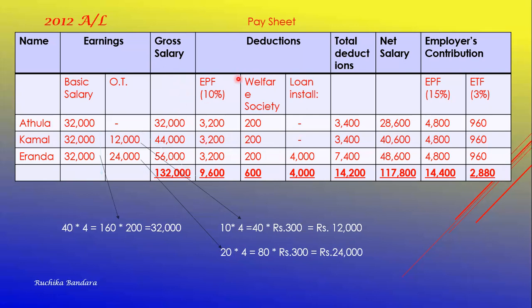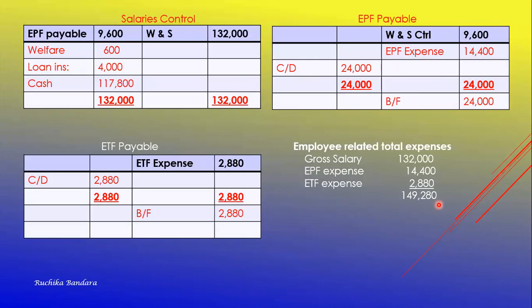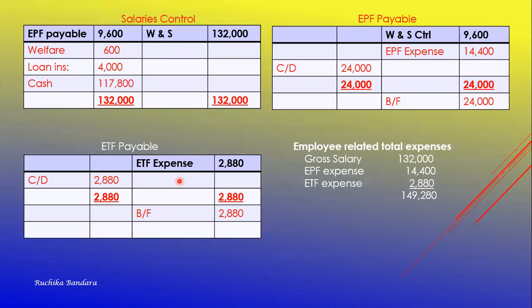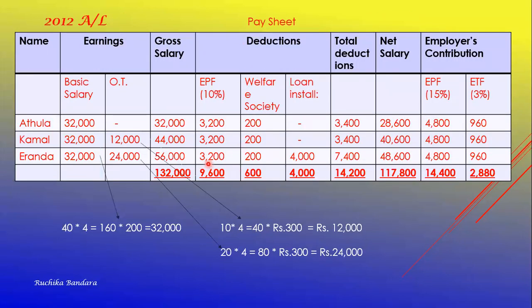When finalizing the pay sheet, add a double line and total vertically. The second requirement is the salaries control account, EPF payable account, and ETF payable account for March. There are double entries to remember. The double entry for gross salary is: debit wages and salaries account, credit salaries control account.